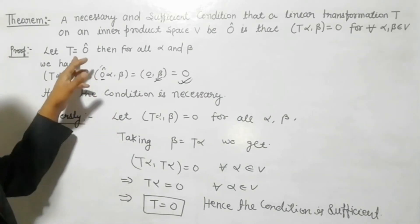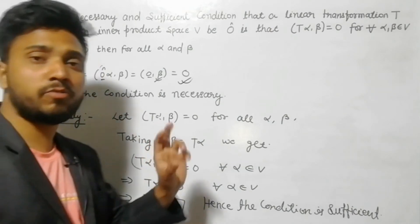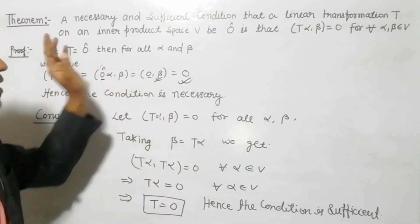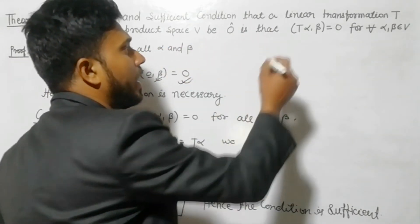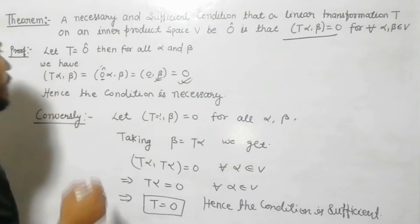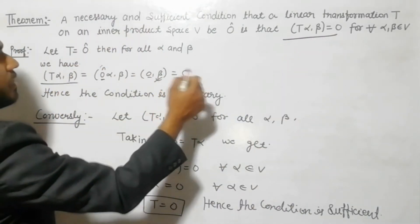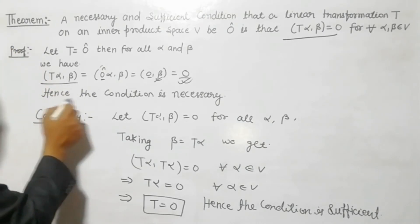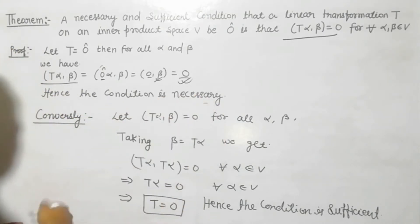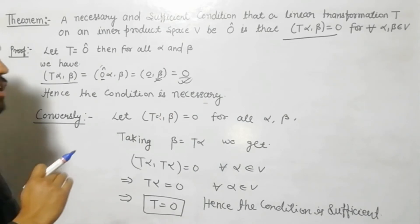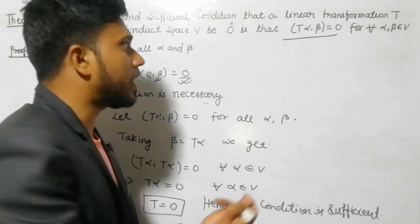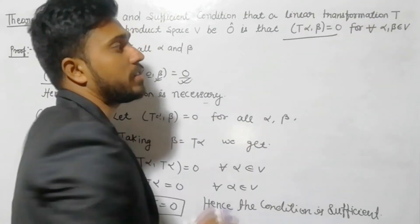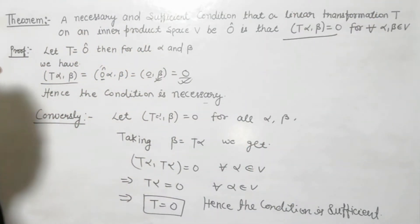So we got this thing. Hence the condition is necessary. See, we took the vector transformation T as zero, and when T transformation is zero, we got this condition equal to zero, right? Now conversely, we have to do the reverse. Hence the condition is necessary. Now conversely, the converse means the reverse process - in the reverse process we'll take this and show the transformation is zero.